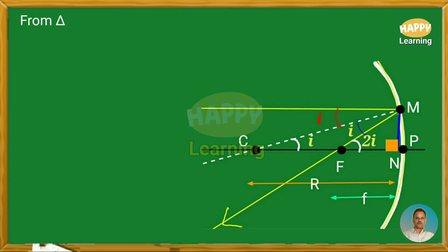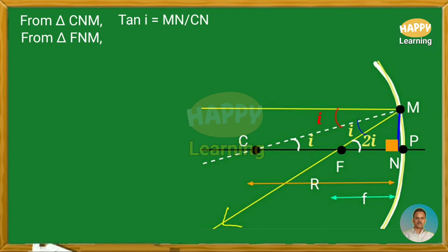From the triangle CNM, which is a right-angle triangle, tan i is equal to MN by CN — opposite side by adjacent side. Similarly, from the right-angle triangle FNM, tan 2i is equal to MN by FN.